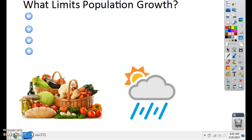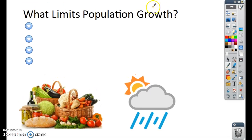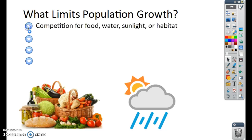What limits population growth? Different things limit population growth. Populations can only grow when there are certain things present in their environment. So first of all, food, water, sunlight, habitat. So resources. Resources limit population growth.